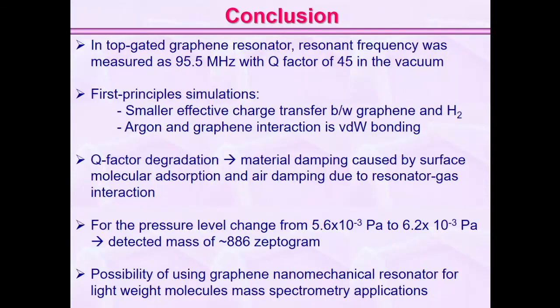To conclude our work: we achieved a resonance frequency of 95 MHz, consistent with theoretical calculation. From first-principles calculations, we found effective charge transfer between graphene and hydrogen, while for argon and graphene it is only van der Waals binding in nature. Q factor degradation with increasing pressure is attributed to material damping caused by surface molecule adsorption and air damping due to resonator-gas interactions. We achieved around 886 zeptogram-level mass sensing. We conclude that rather than measuring heavy molecules like xenon and naphthalene using resonators, we can use graphene resonators for lightweight gas molecules as well. Thank you very much.